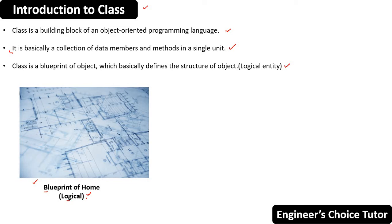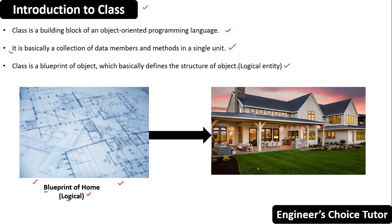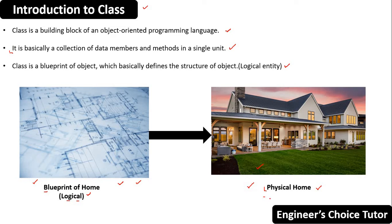Now, by following this blueprint of a home, we can construct our real home. This is what we call a physical home — this is actually a home, an object. And this is just a blueprint. The blueprint defines the structure of a home, and by following that blueprint, we usually construct our real home. So in the same way, class is a logical entity and the object is a physical or real-time entity.